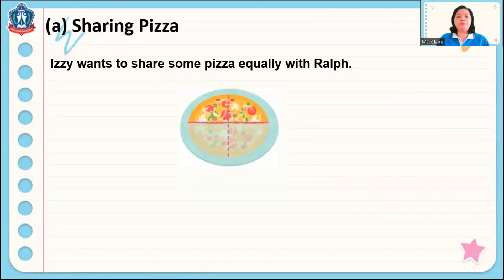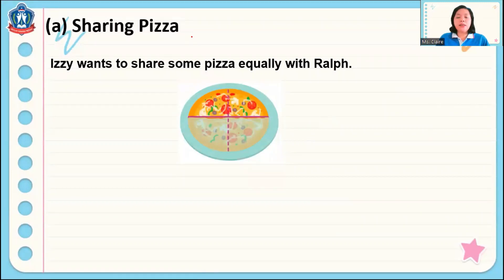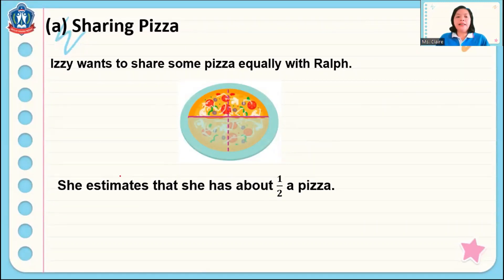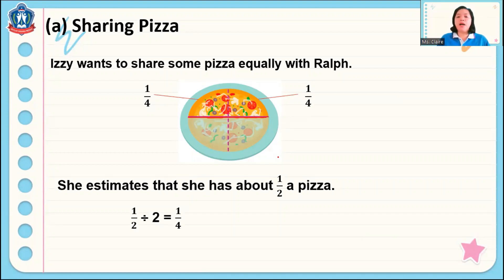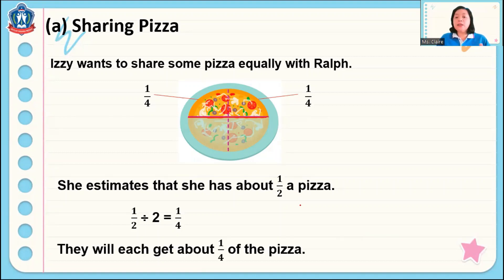Here is a problem: Izzy wants to share some pizza equally with Rob. She estimates she has about one half of a pizza. That one half is shared between both of them. If we cut the one half into two, it becomes one quarter. So one half divided by two is one quarter. Each of them will get one quarter of a pizza.